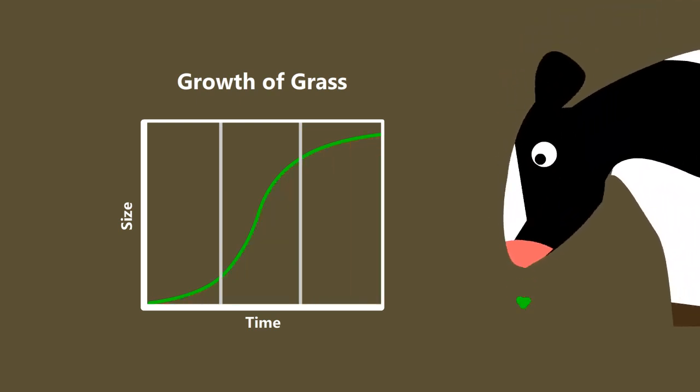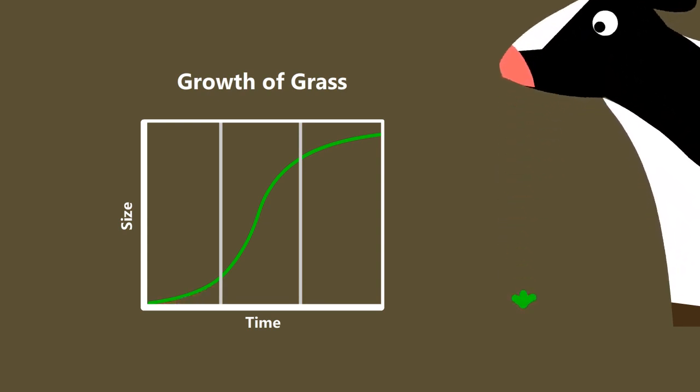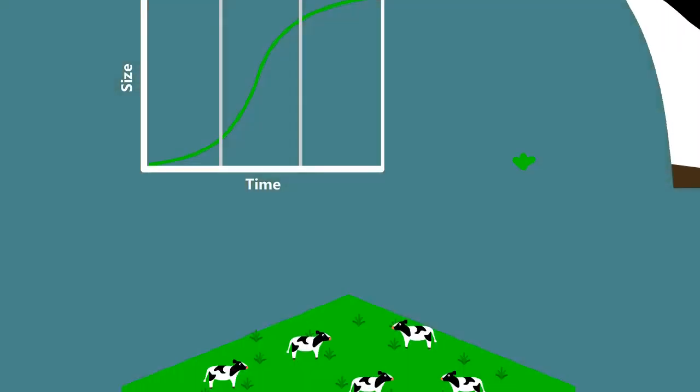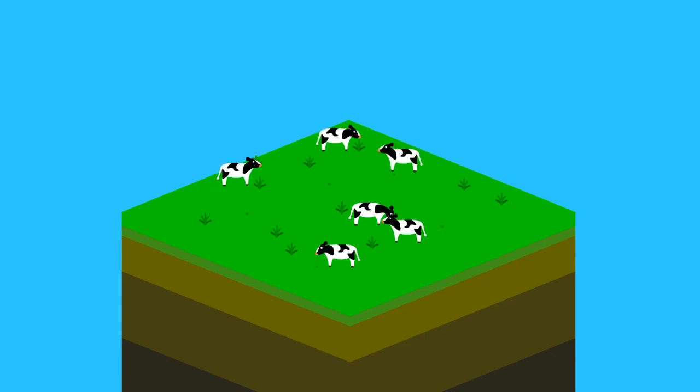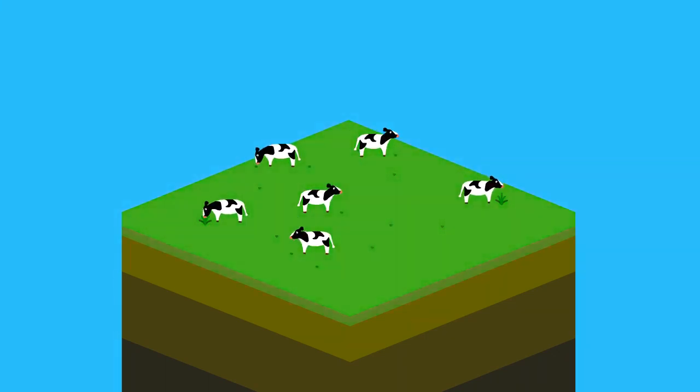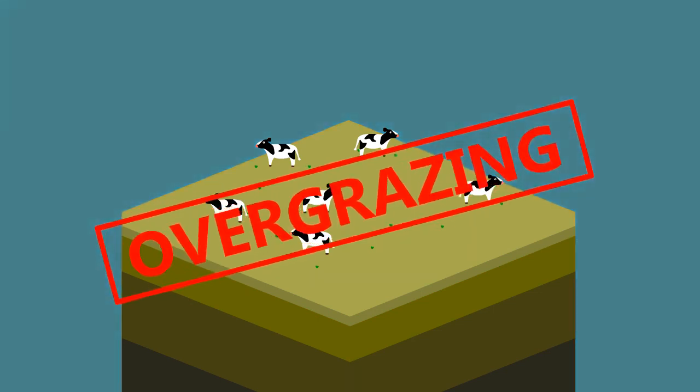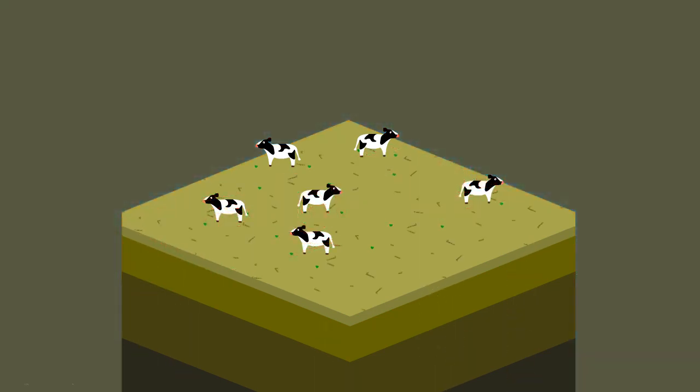If it's eaten before it gets to this point, its growth will never speed up. This is what happens with traditional pastured animals. They eat all the grass, which doesn't have the chance to grow back fast enough before getting eaten again, and we have overgrazing. This leads to soil erosion, drought, and desertification.